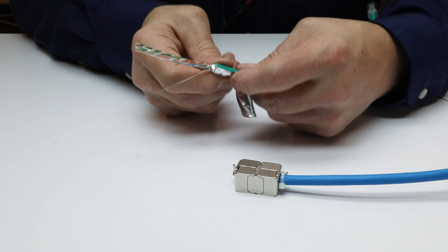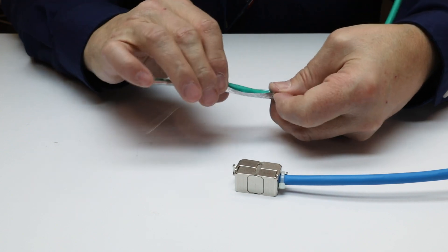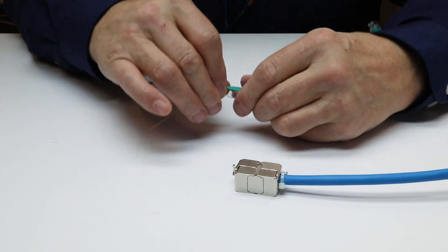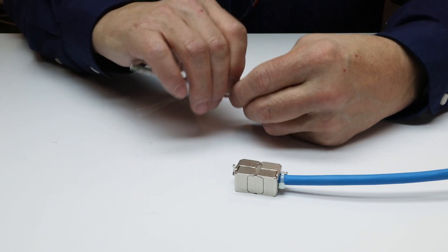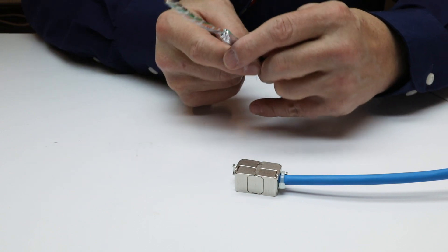Pull back foil and drain wire. Foil must be metal side out. Some shielded patch cord constructions may require a half twist when pulling the foil back. If the shielded patch cord has a mesh braid, the braid may be combed out and twisted together to form a drain wire.